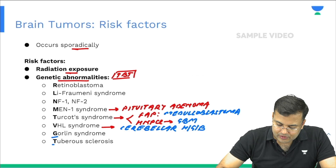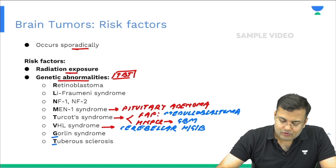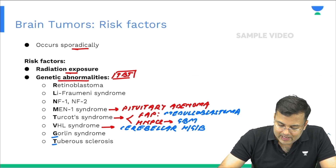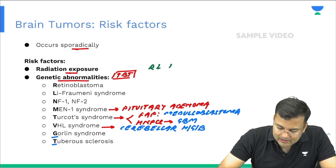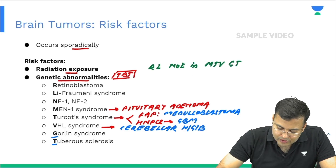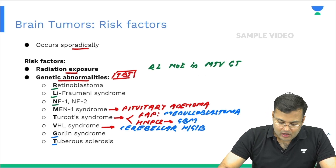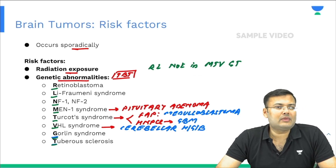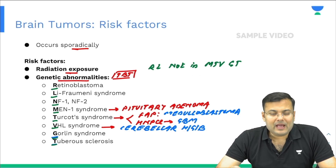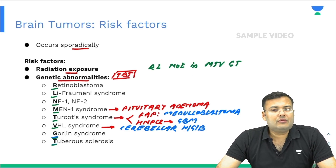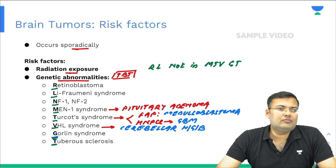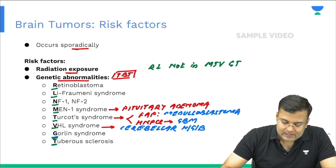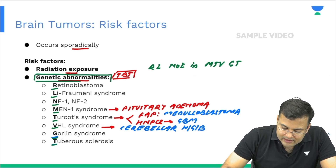Next is Gorlin syndrome, and then tuberous sclerosis. To remember all these genetic syndromes, the mnemonic is: RL Not In MTVGT — R: Retinoblastoma, L: Li-Fraumeni syndrome, N: NF1-NF2, M: MEN1 syndrome, T: Turcot syndrome, V: VHL syndrome, G: Gorlin syndrome, T: Tuberous sclerosis. These are the genetic abnormalities associated with increased risk of brain tumor.